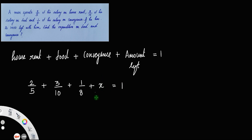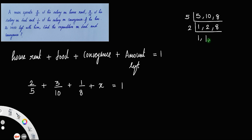Now we should find the value of x. The denominators are 5, 10, and 8, so let us find their LCM. Taking 5 and 10: the common factor is 5, giving 1 and 2. The factor 2 goes into 8 four times. So the LCM is 5 × 2 × 1 × 1 × 4 = 40. The LCM of the denominators is 40.